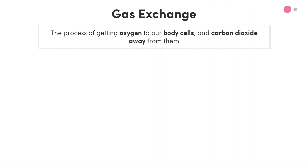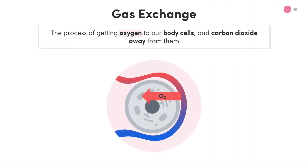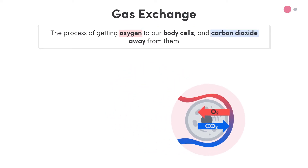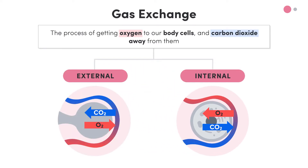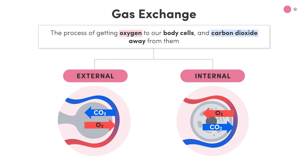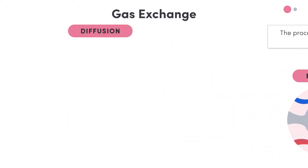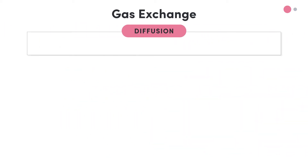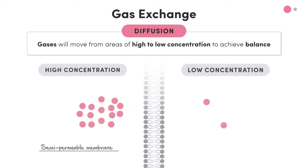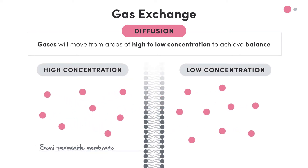Gas exchange is the process of getting oxygen to our body cells and carbon dioxide away from them. There are two types of gas exchange in our bodies: internal and external. Before we go any further, we need to understand a key process involved in gas exchange — diffusion. Diffusion states that gases will move from areas of high to low concentration to achieve a balance, and is an essential piece of info for the rest of this lesson.